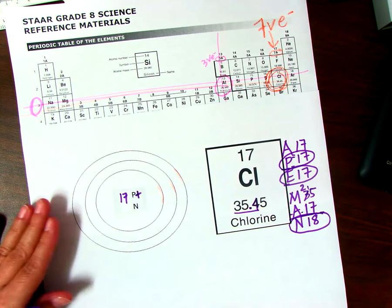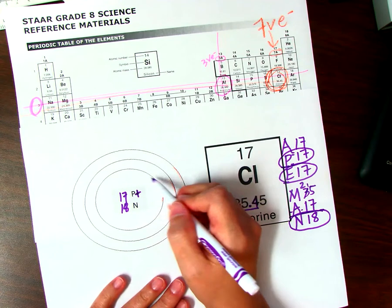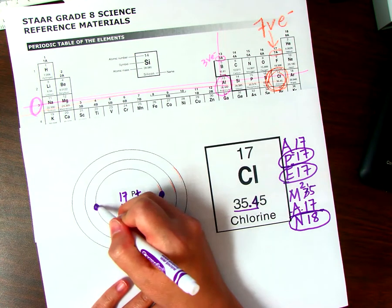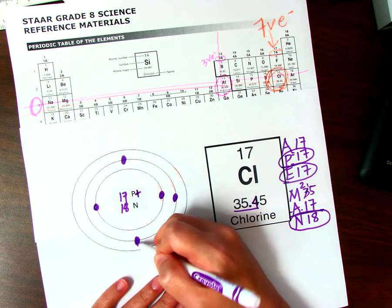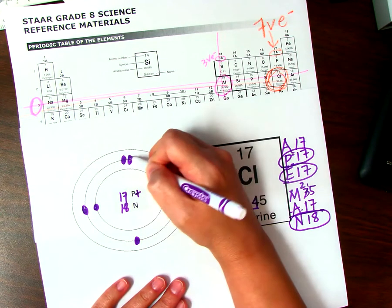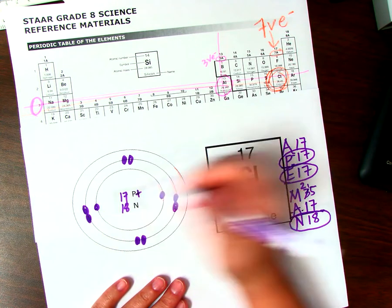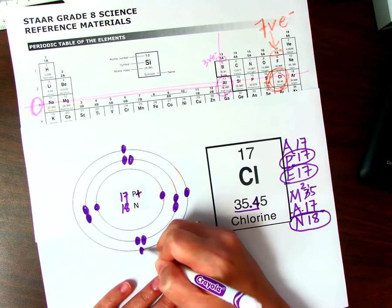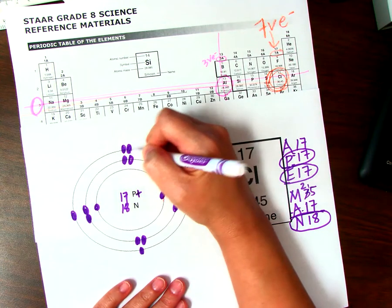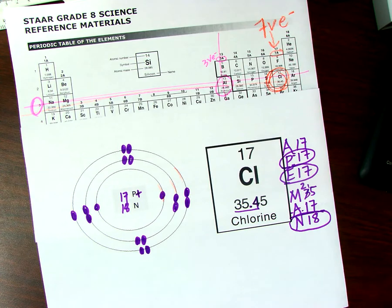17 positive protons, 18 neutrons, and we should have 17 electrons. So we'll start in the first level. We only can fit two. And then we need to go to the second level. 3, 4, 5, 6, 7, 8, 9, 10. We need seven more. 11, 12, 13, 14, 15, 16, 17.